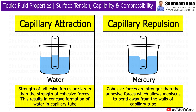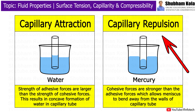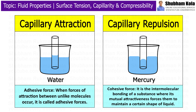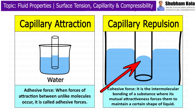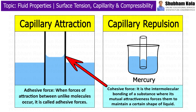Alternatively, for mercury, the cohesive forces are stronger than the adhesive forces, which causes the meniscus to bend away from the walls of the capillary tube. This is called capillary repulsion. Cohesive force is the intermolecular bonding of a substance where mutual attractiveness forces the liquid to maintain a certain shape. When forces of attraction occur between unlike molecules, it is called adhesive forces.